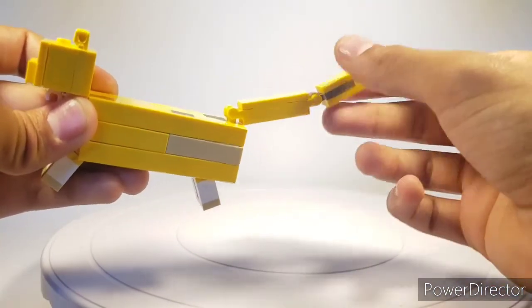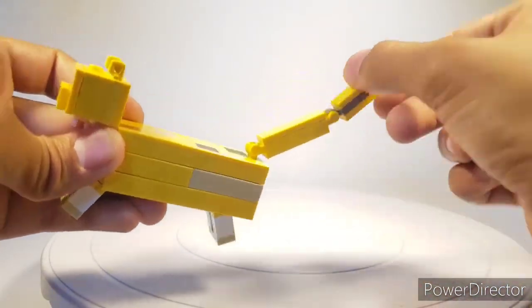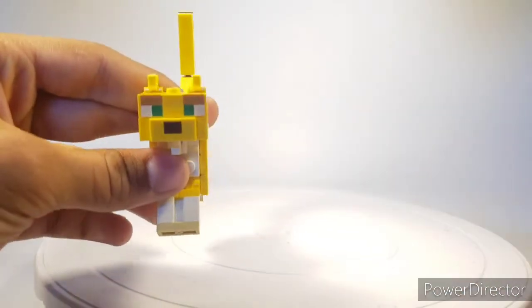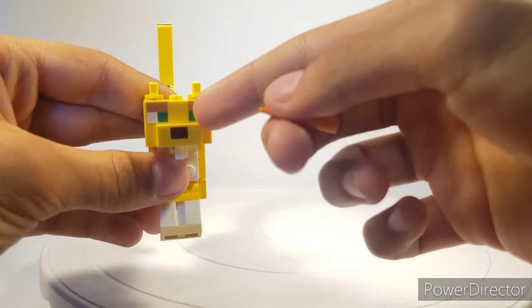So you do have a lot of articulation on where you want that tail to go. It can't go any further as far as there, and this one can be brought all the way down and all the way up. Aside from that, that's pretty much it for the ocelot.